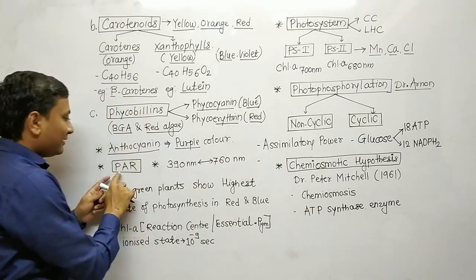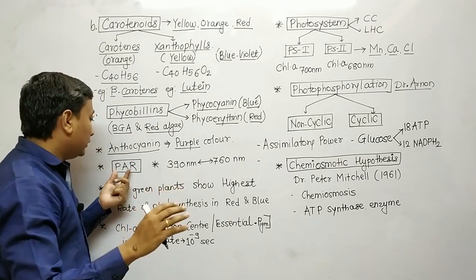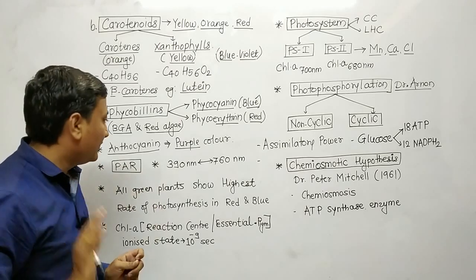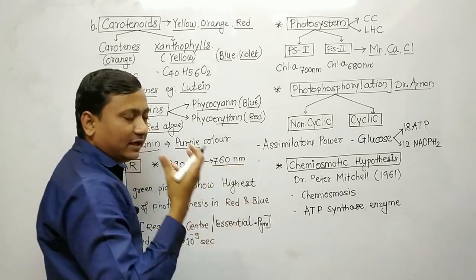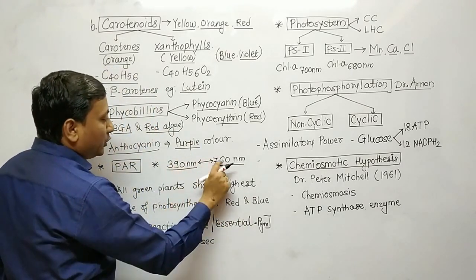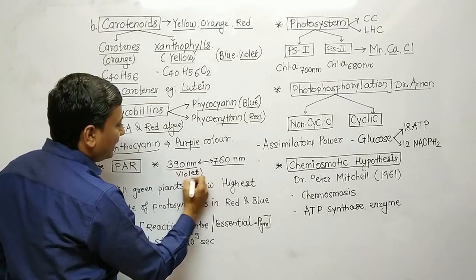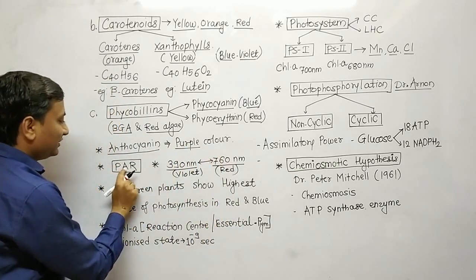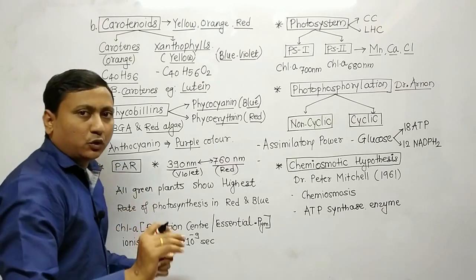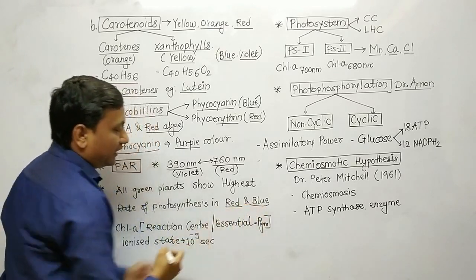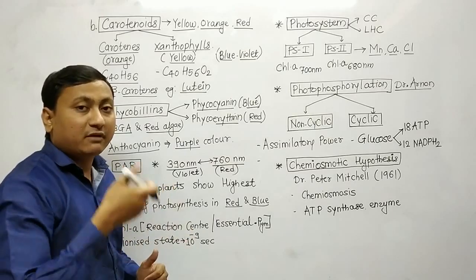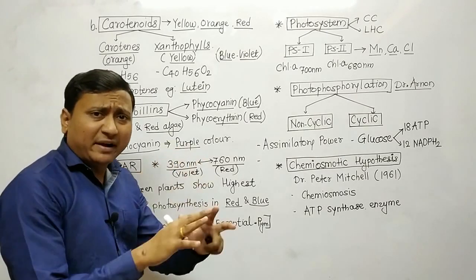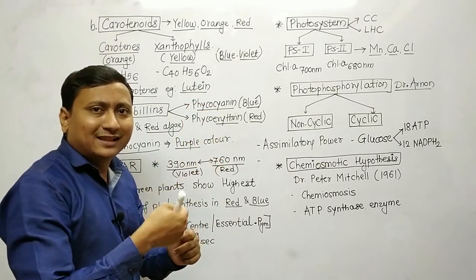The next topic is PAR — Photosynthetically Active Radiation. In photosynthesis, visible light ranges from 390 nanometers to 760 nanometers (red color). All green plants show the highest rate of photosynthesis in red and blue light, showing the maximum highest rate in these two colors.